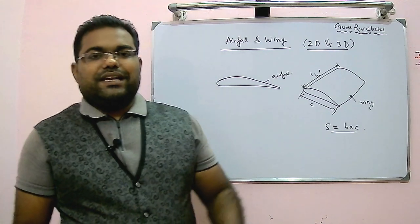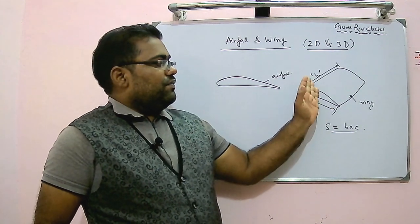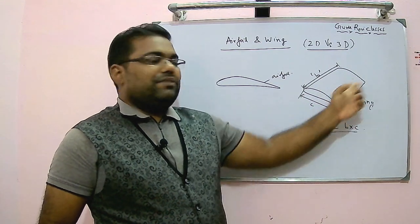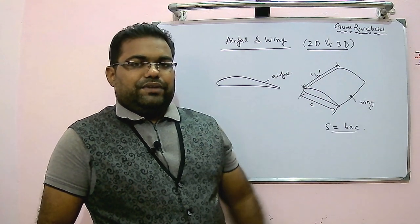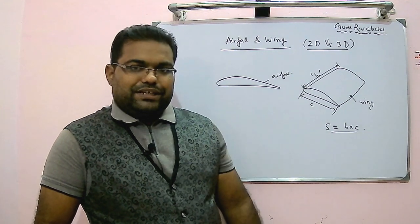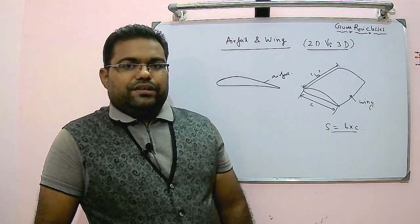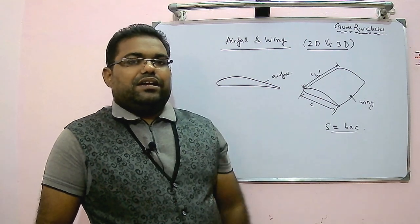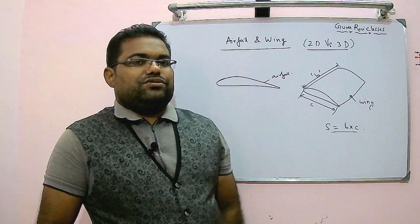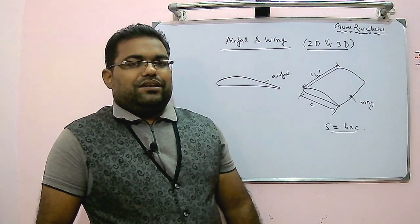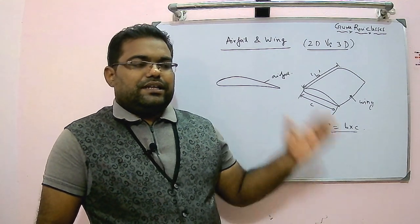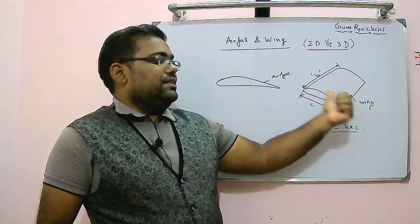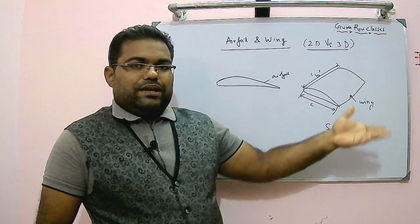The flow around the wing will be three-dimensional in nature because there will be flow around the top and bottom surfaces, and there will also be a spanwise flow existing in the case of a wing. So it is a three-dimensional flow geometry around the wing section. But in the case of an airfoil, it does not have any span, so there is no spanwise flow — the airfoil has two-dimensional flow.